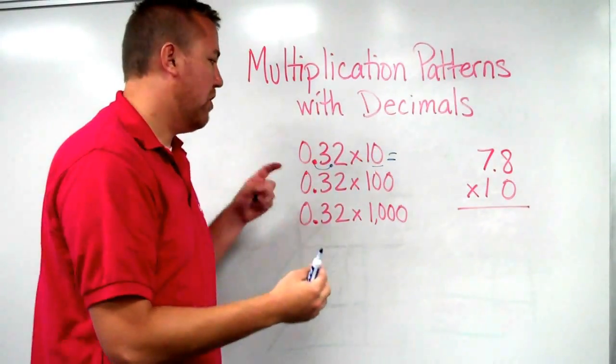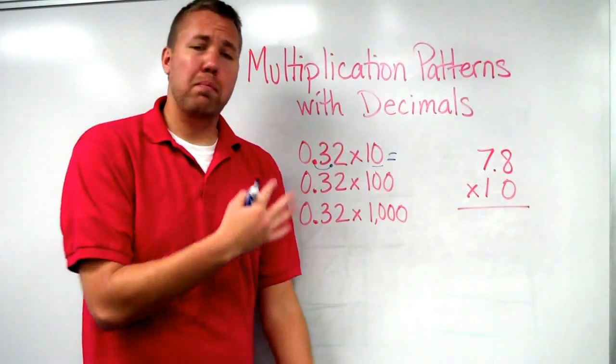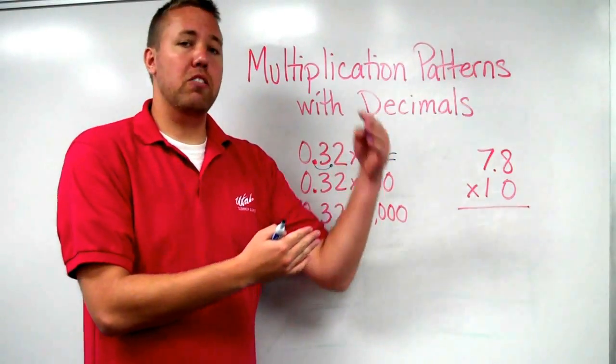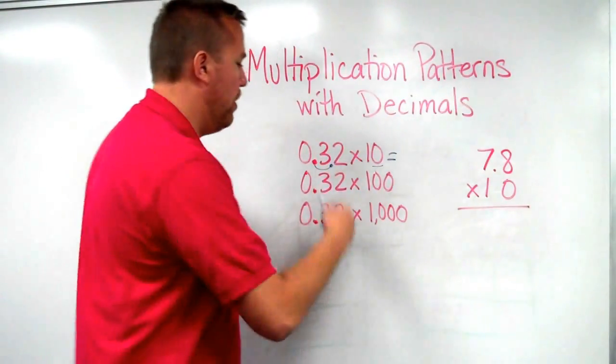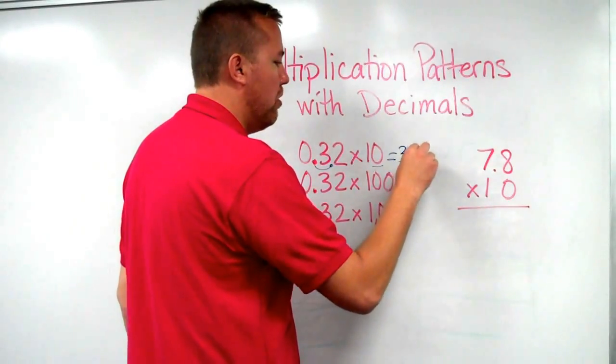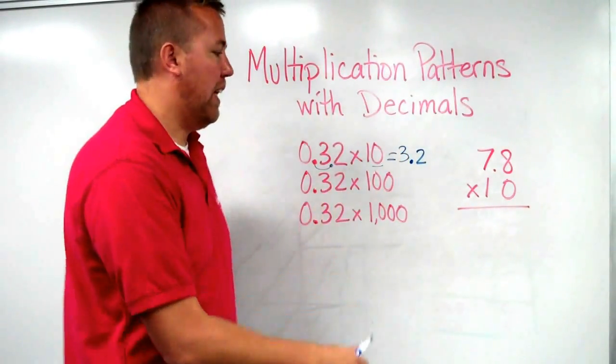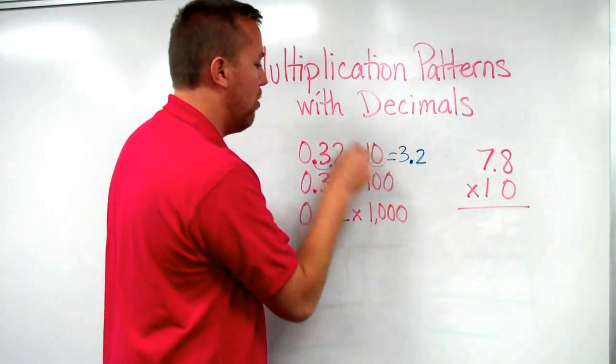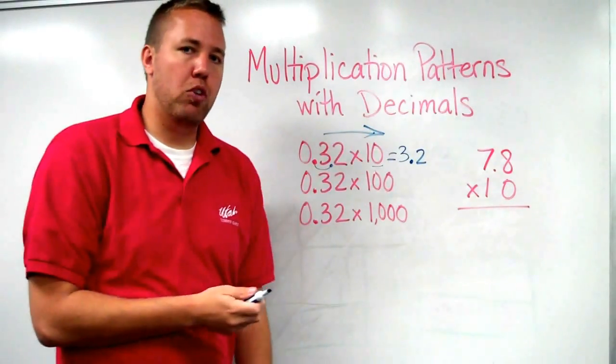The reason why I did it to the right is because I'm multiplying by a whole number. That number is going to get bigger. So 0.32 times 10, I move that decimal just one place, one place to the right because I'm multiplying.